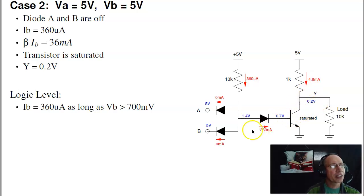And the logic level is, as long as the current goes right, I'm at logic level 1. As long as this is above 0.7 volts, in theory, current will go right, so the logic level is anything above 0.7.